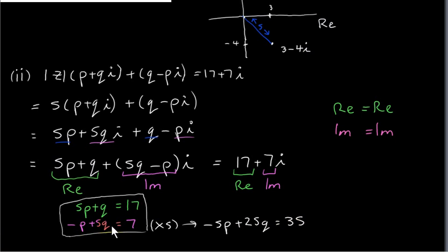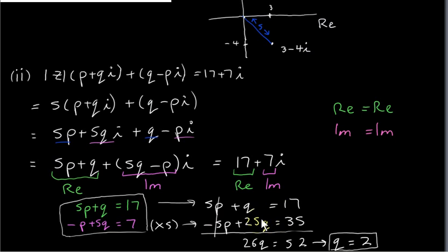We multiply the bottom equation by 5 because, if we write down the top equation and add it to the bottom, the p terms will cancel and we can find q. Adding the two equations: 1q plus 25q gives 26q, and 17 plus 35 is 52. So q is 52 divided by 26, which is 2.